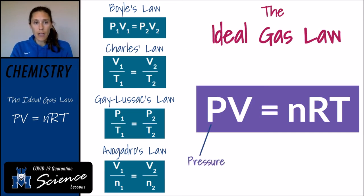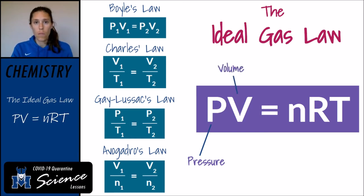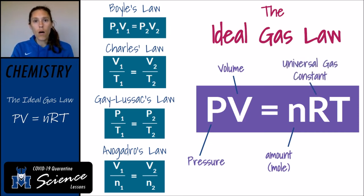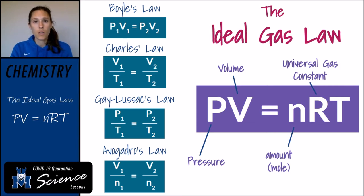The P in the ideal gas law stands for pressure. Pressures can be in atmospheres, pascals, or kilopascals. Our volume will usually be in liters or milliliters, and we'll have to convert to liters to plug it into the ideal gas law. N is the amount of gas that you're dealing with, and we'll report that in the number of moles. R is a constant — a number you need to throw in there to make everything work — and we'll talk about what that number is, the universal gas constant, and where it comes from.